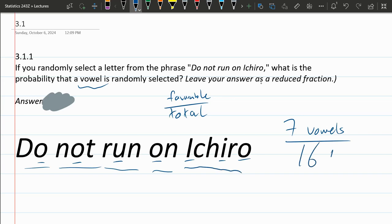So we have 7 vowels out of 16 total. They want a reduced fraction. My fraction 7 over 16 is not going to reduce.